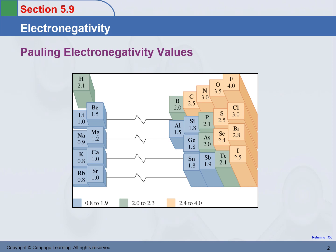From left to right in the same period, electronegativity gets higher and higher. Top to bottom, it gets lower. Electronegativity of fluorine is the highest. Scientists have numbers assigned to them already, but knowing the trend of electronegativity in the periodic table is good enough for us.